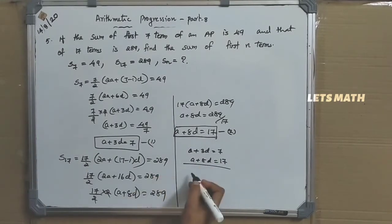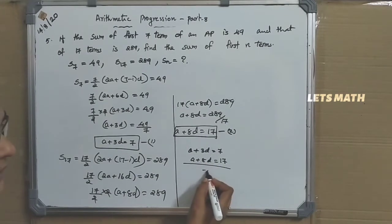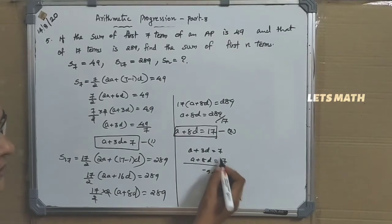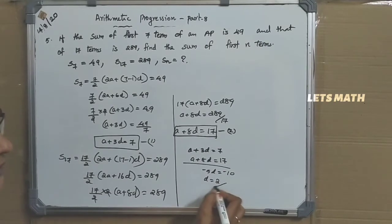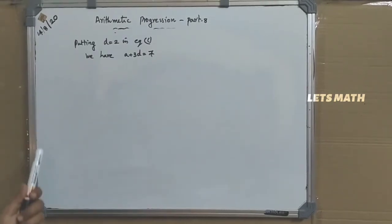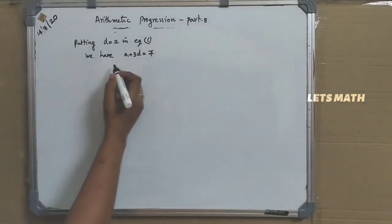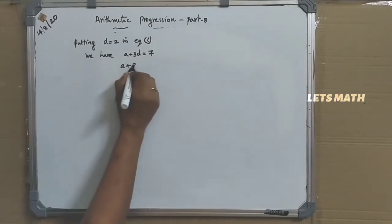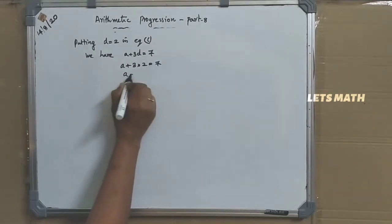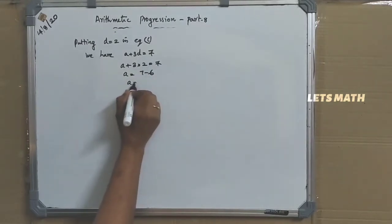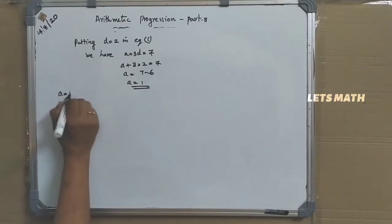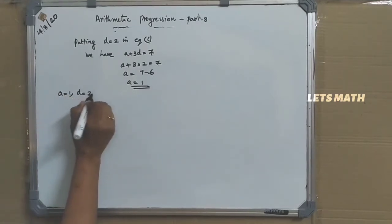Subtracting the equations: 3D minus 8D is negative 5D, and 7 minus 17 is negative 10. So D equal to negative 10 by negative 5, giving D equal to 2. Putting D equal to 2 in equation 1: A plus 6 equal to 7, so A equal to 1. We have A equal to 1 and D equal to 2.